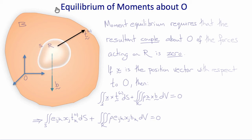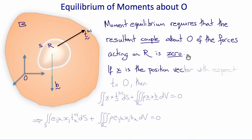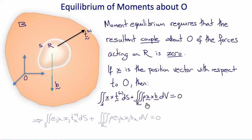Now we can do the same thing for the equilibrium of moments taken about the origin O. We have body B, a closed region R with surface S, surface tractions T-N acting on the surface, body forces B per unit mass acting on the volume, and an origin O. Moment equilibrium requires that the resultant couple about O of the forces acting on R is zero. If X is the position vector with respect to O, the moment due to surface forces is the surface integral of X cross T-N with respect to S, and the moment due to body forces is the volume integral of rho times X cross B, and this must equal zero.